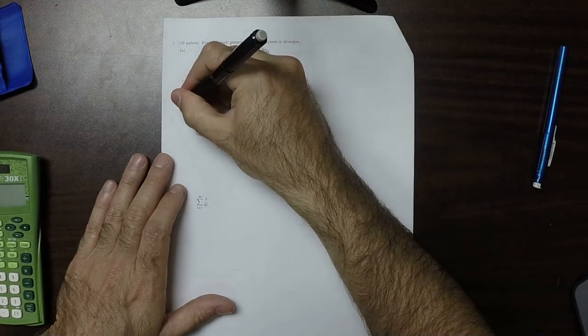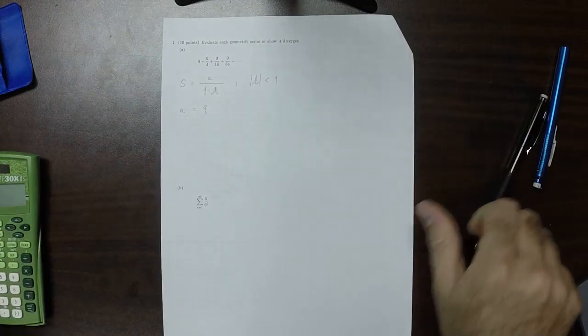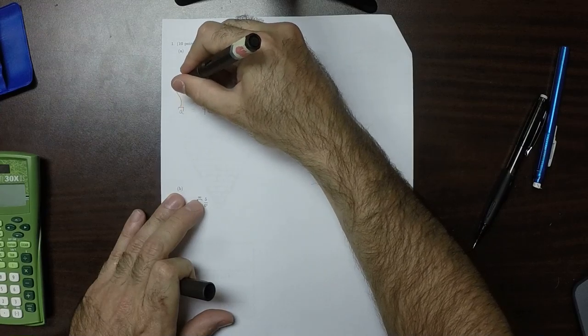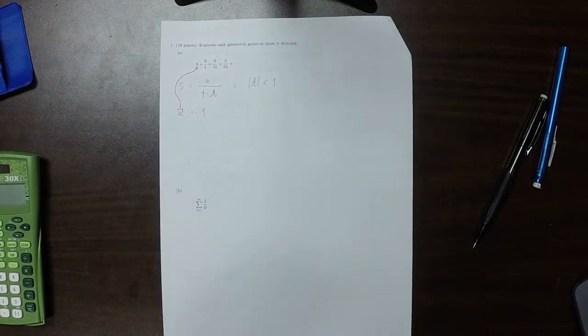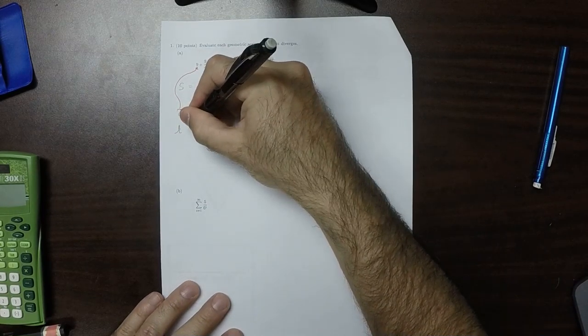So A, we need to figure out A and R. A is 9, because A is always the first term. R, well, that's the ratio of two consecutive terms.